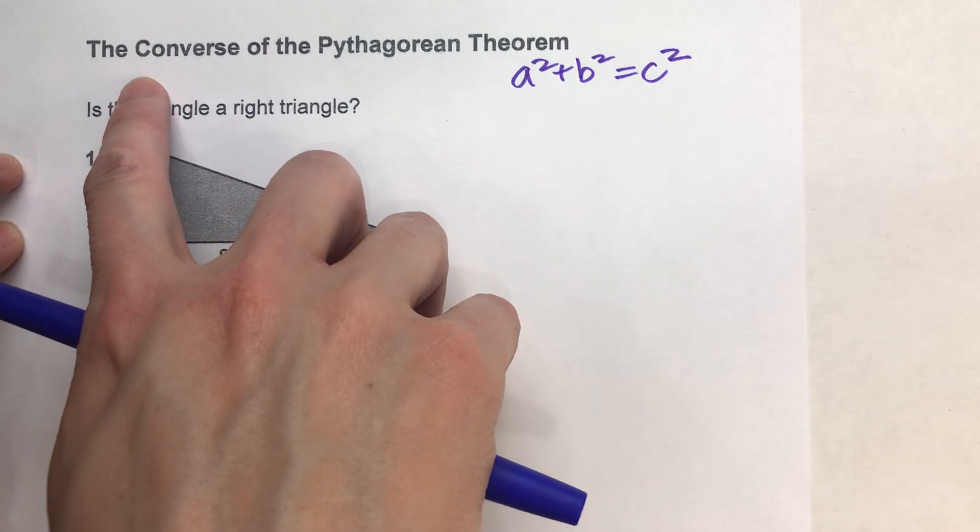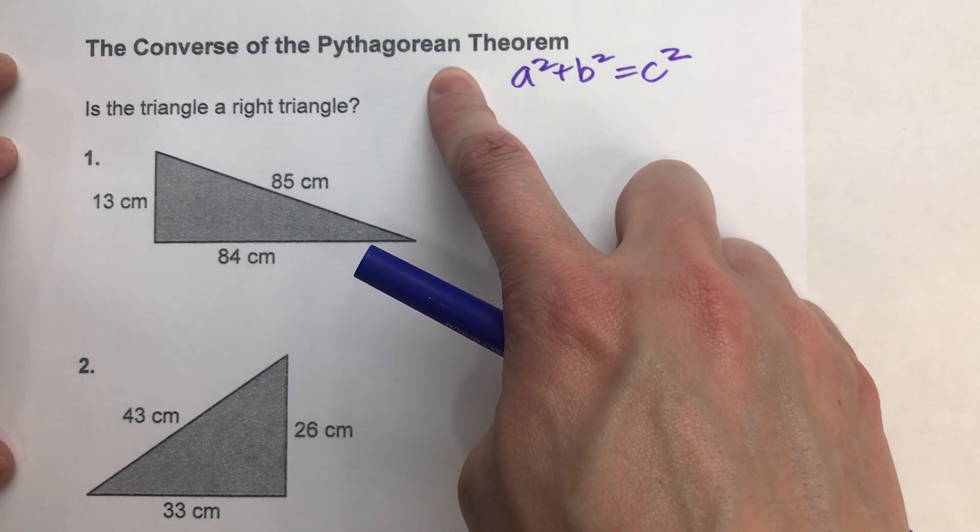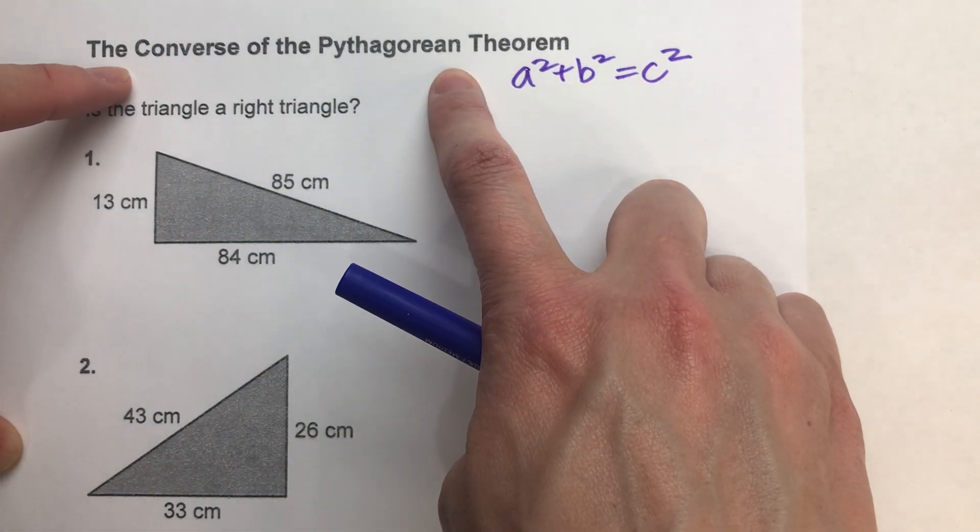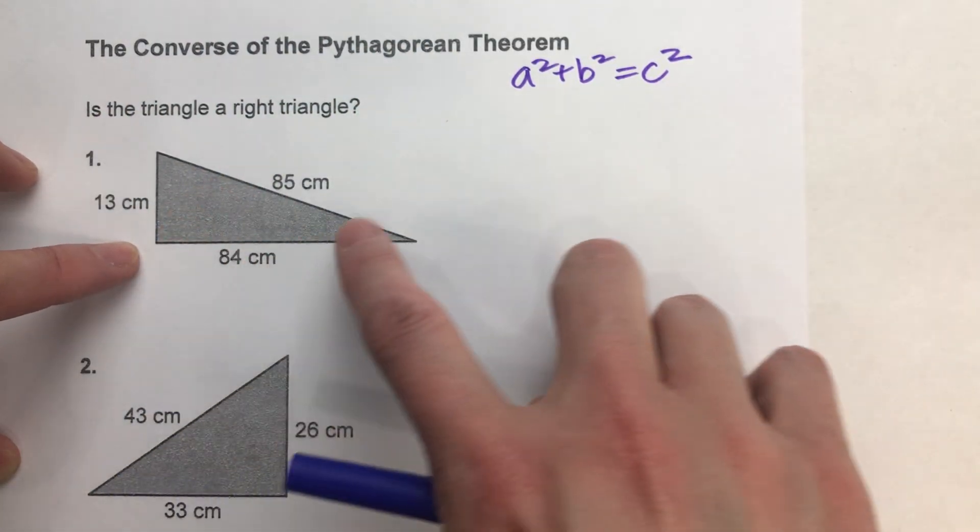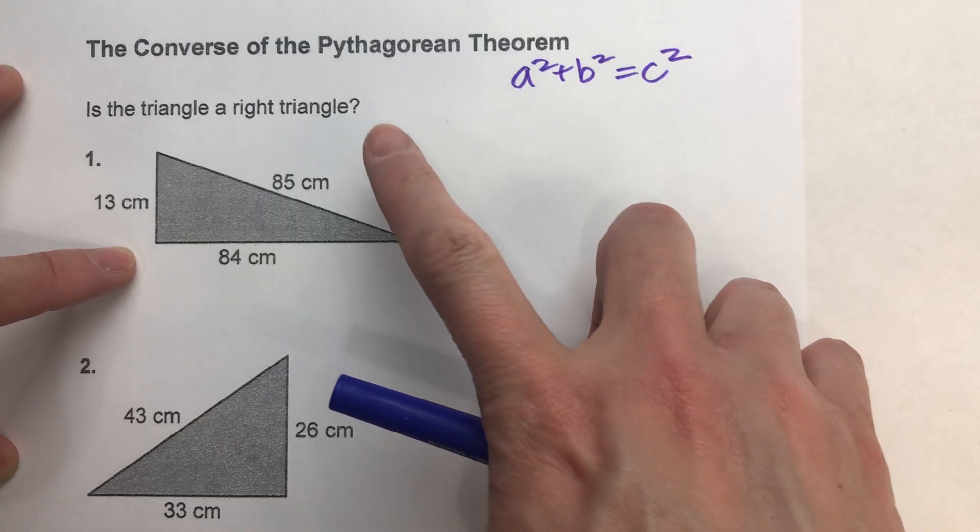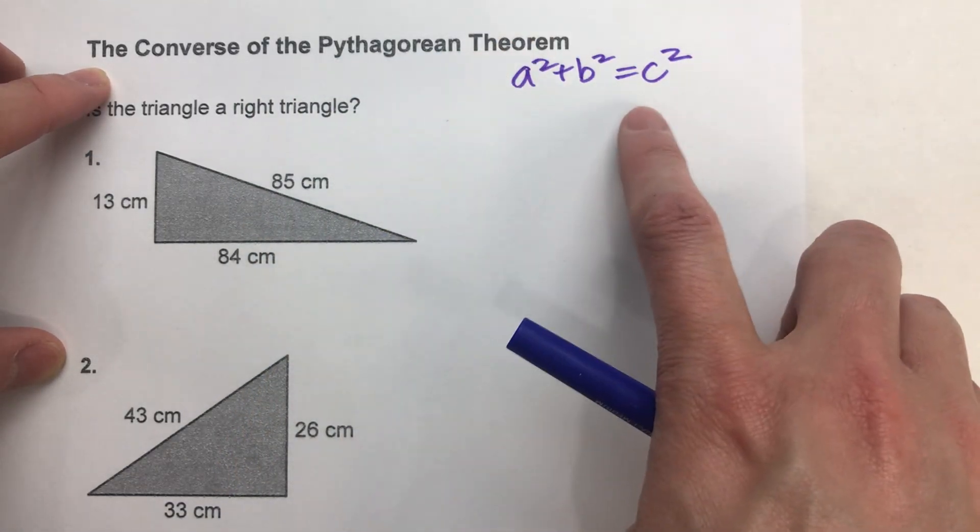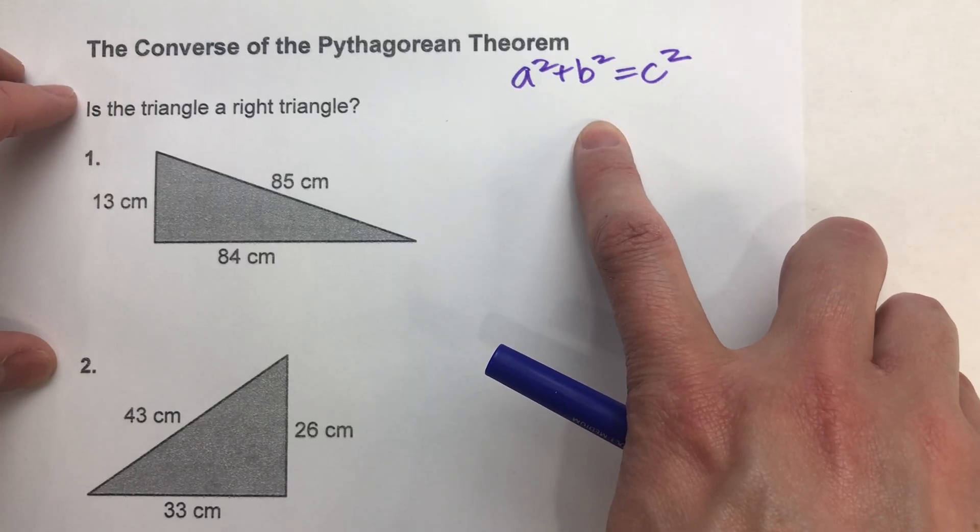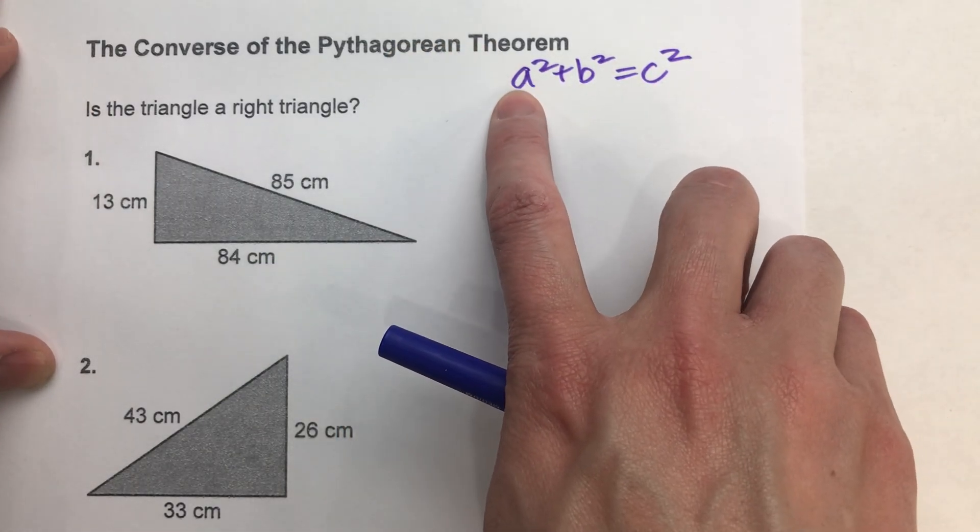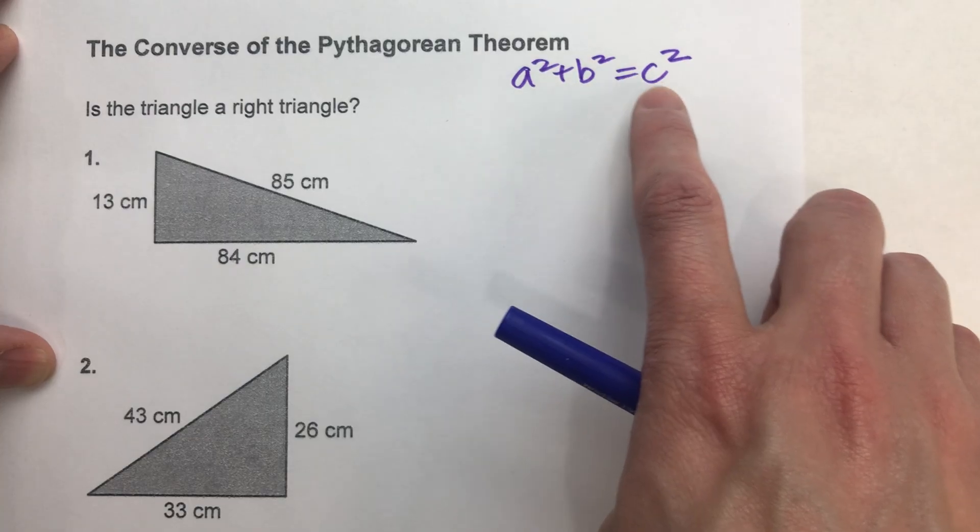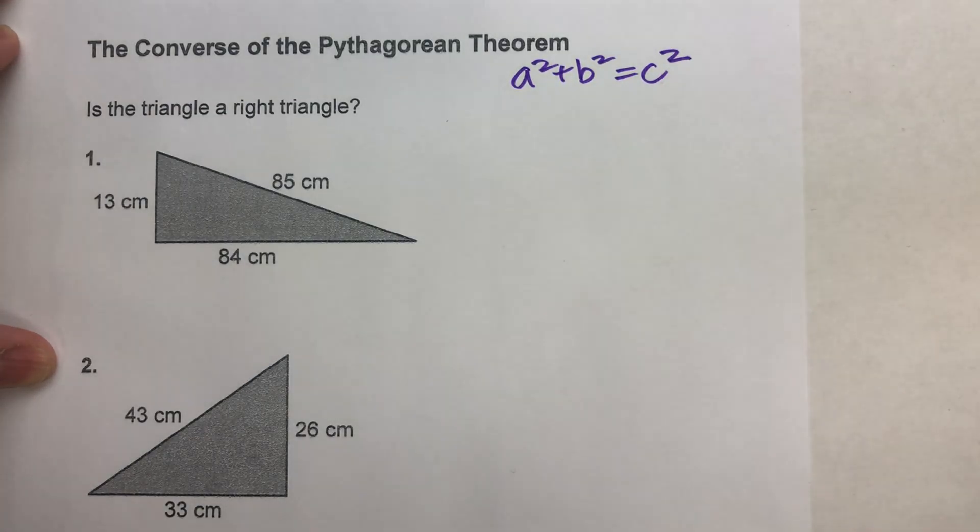Today, we are using the converse of the Pythagorean Theorem. The converse of the Pythagorean Theorem is a way to test to see if a triangle is a right triangle. The way we do that is we see if the Pythagorean Theorem works for the side lengths of that triangle. In other words, does a squared plus b squared equal c squared for that triangle?